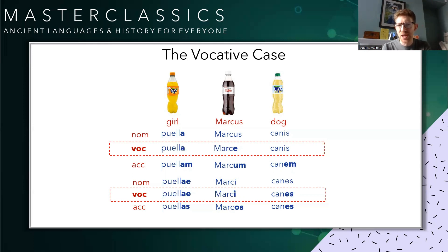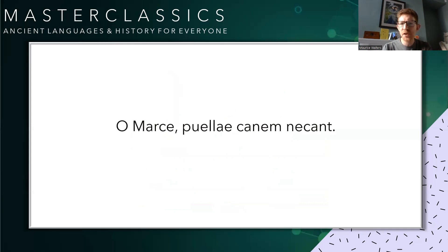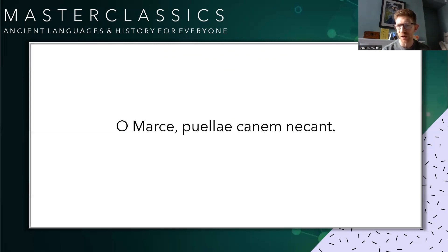We've now met three cases — let's have a look at some examples with the vocative. 'O marce, puellae canem necant.' Have a really careful look at this. Hopefully you worked out that marce is in the vocative, so we're talking to Marcus — the sentence begins 'oh Marcus.' Then we've got puellae, and if you skipped to the verb at the end of the sentence, you'll have seen that it's a third person plural — which means 'they are killing.' So connecting that with puellae, it means the girls are killing. And kanem there is an accusative singular — the dog. So: oh Marcus, the girls are killing the dog.